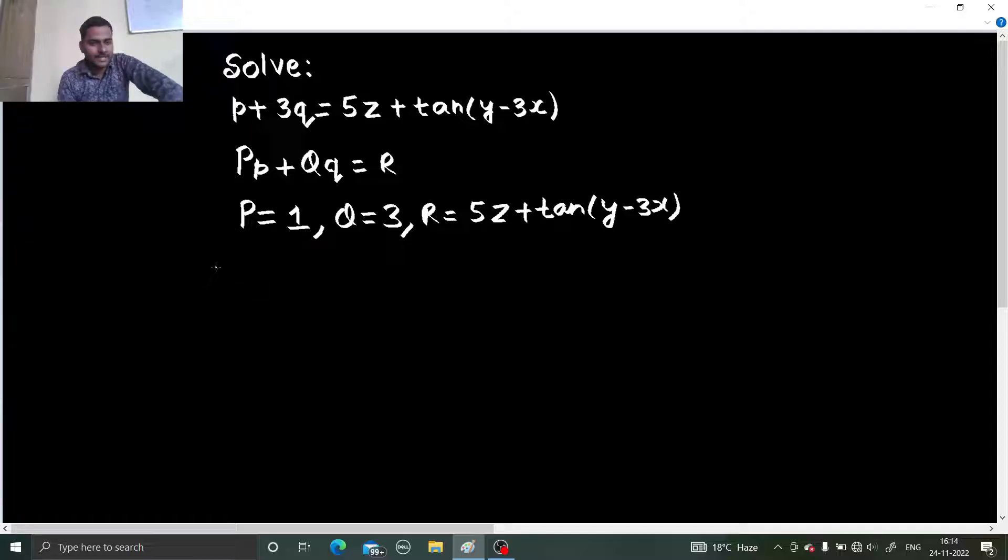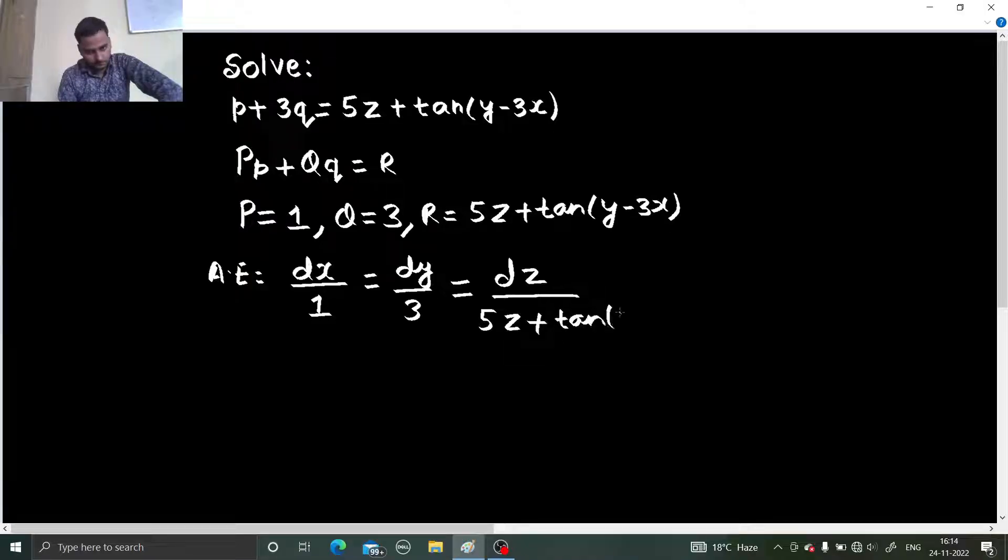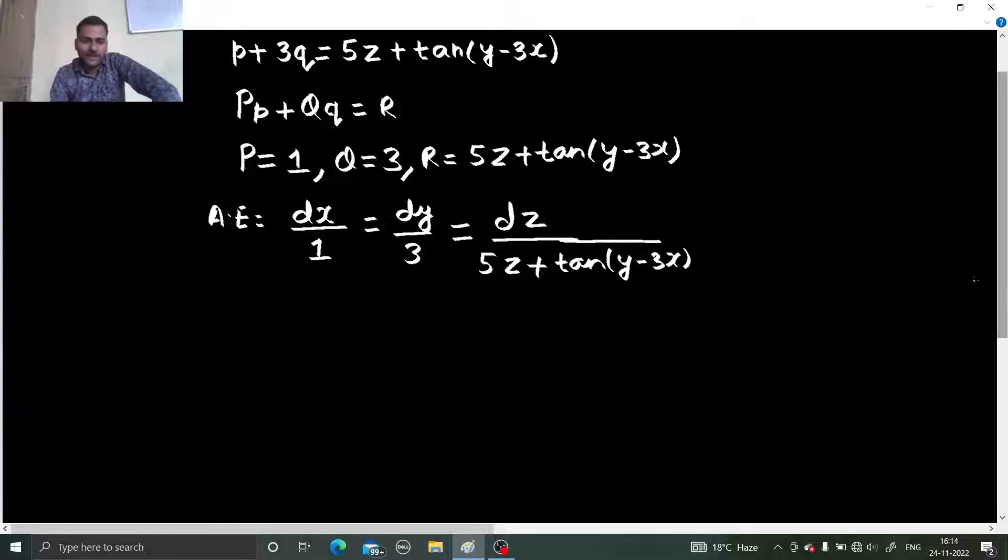Let us write the auxiliary equation which will be dx by P equals to dy by Q equals to dz by R, which is y minus 3x. Now, method of grouping is working fine with the first two. Method of grouping tells that simply equate them and get an equation.